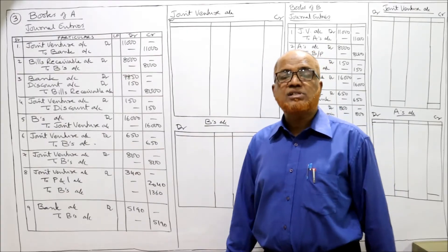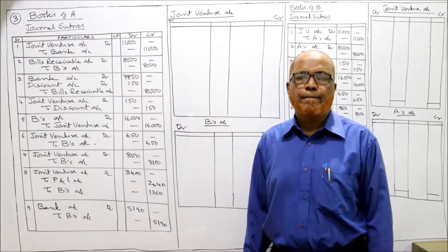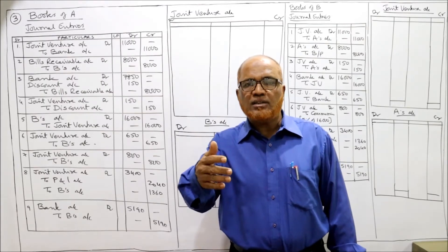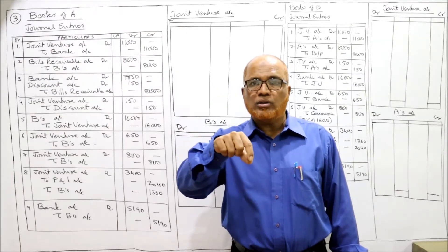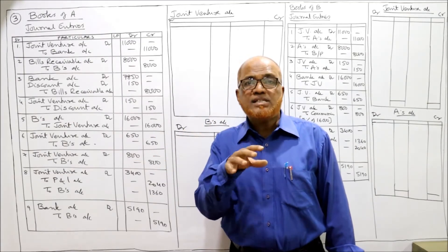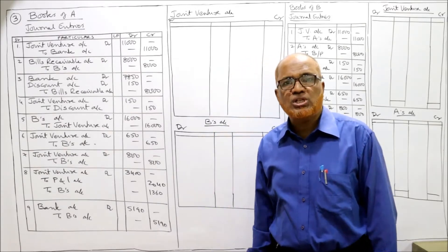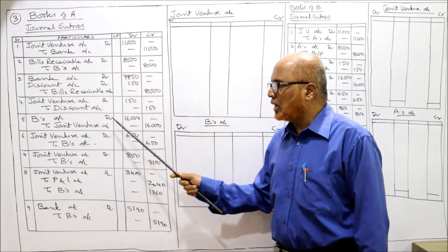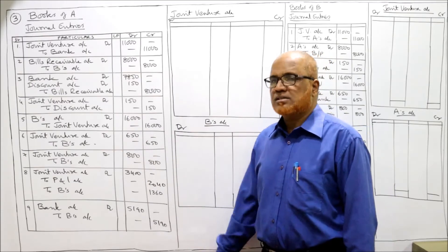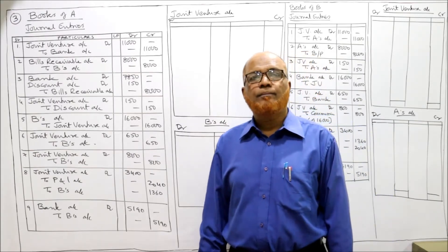B sold the timber for 16,000. Now A got the information that B has sold all the timber for 16,000. The entry is: B's Account Dr. to Joint Venture Account.